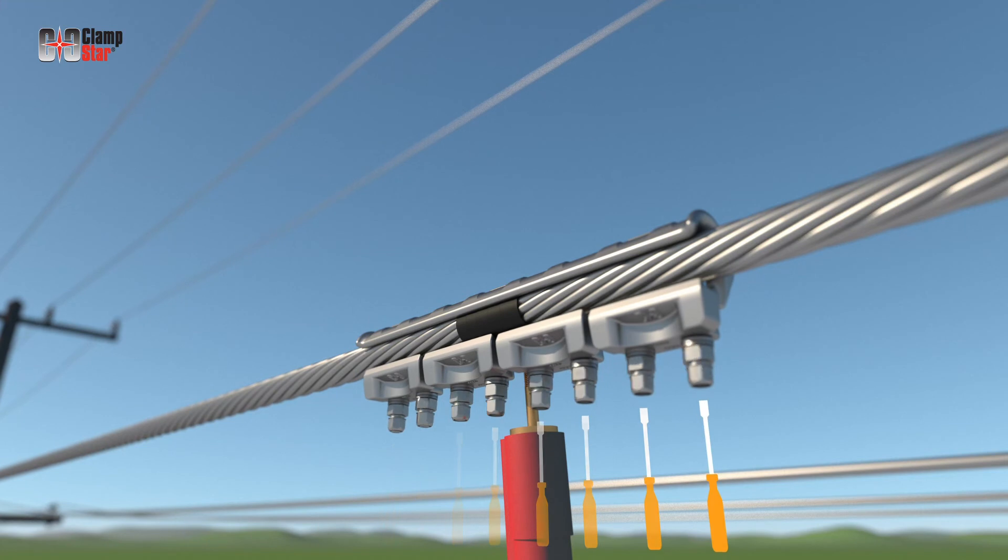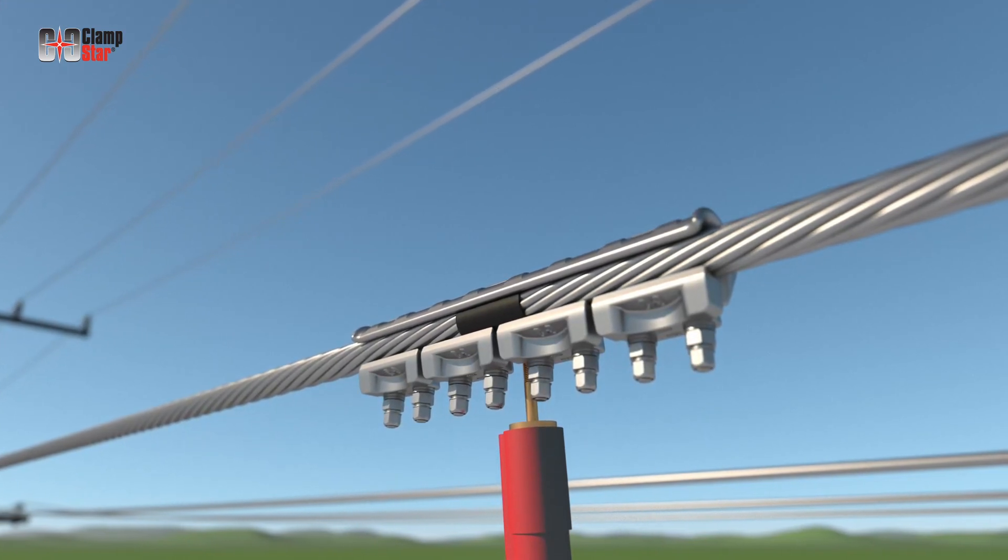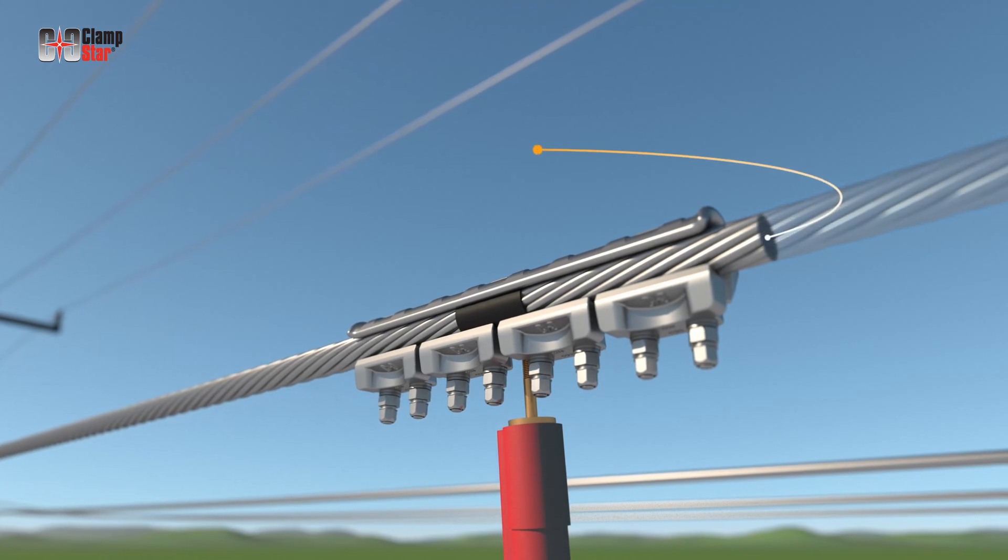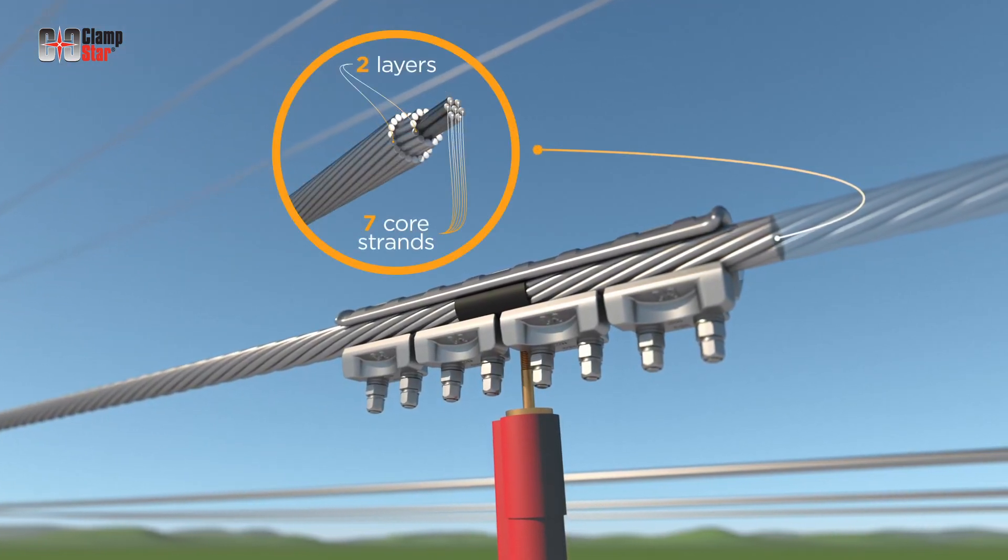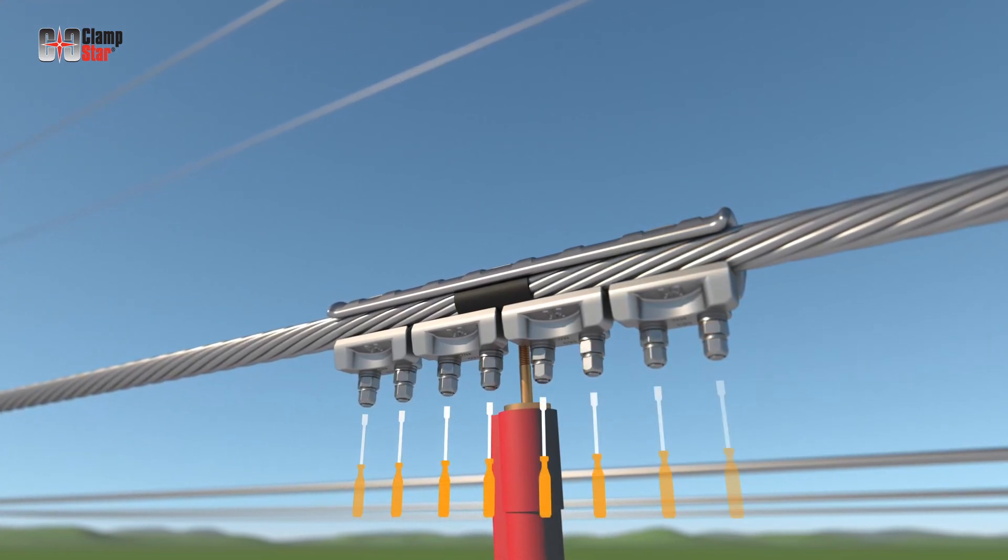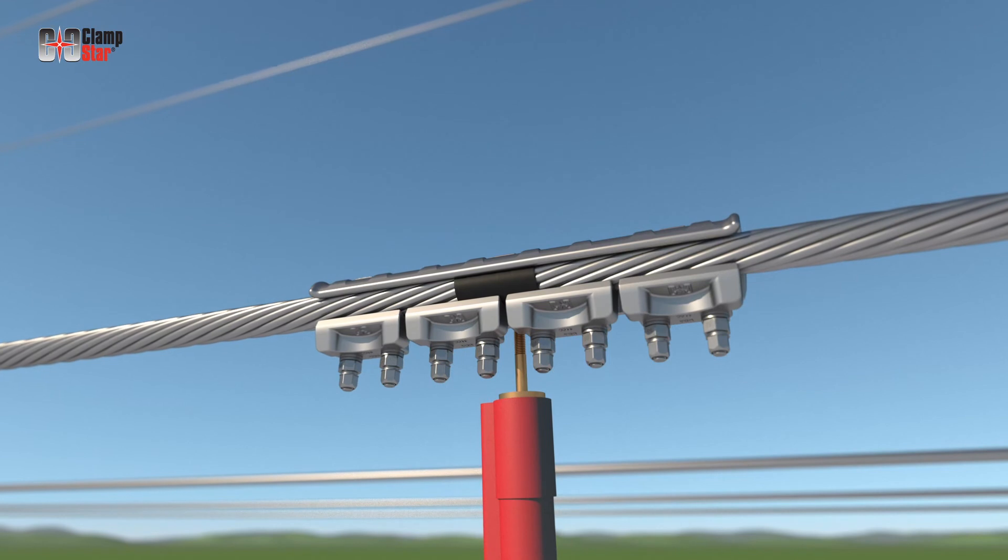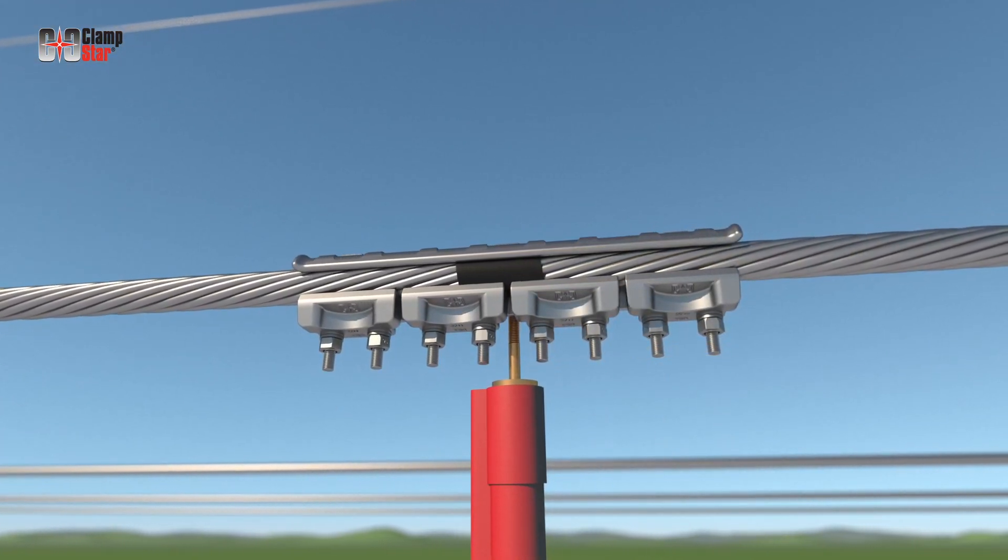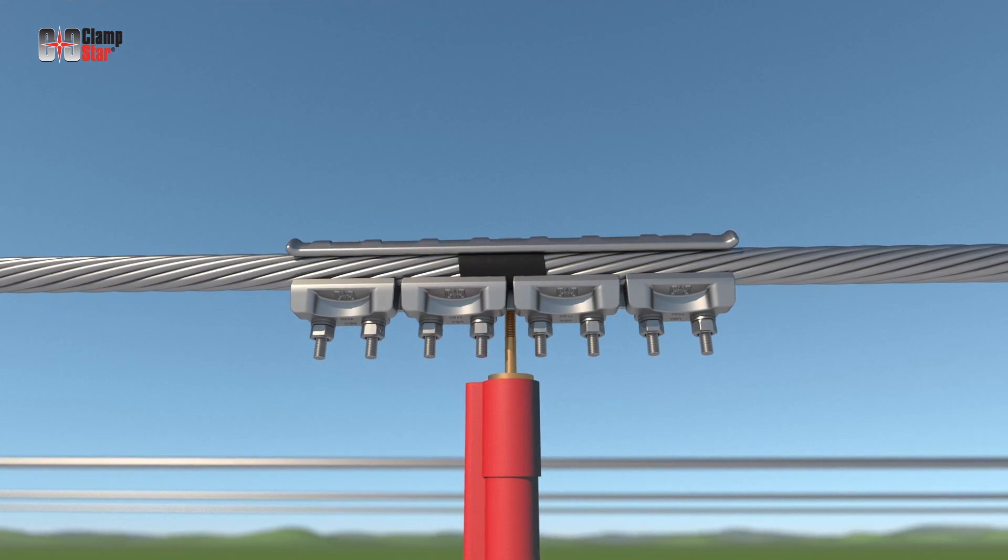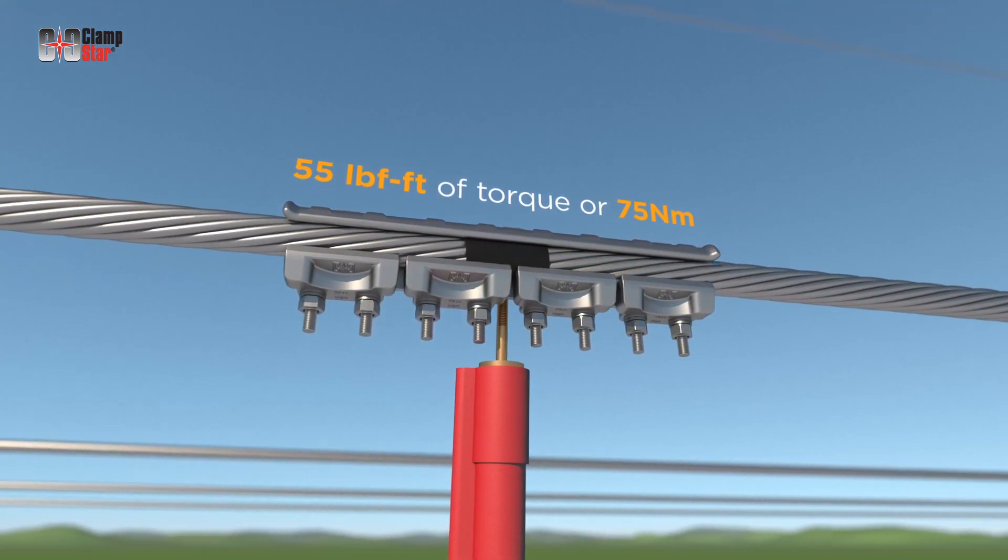Tighten the nuts in a linear fashion equivalent to the number of layers of aluminum stranding over the core. For example, assume a conductor has two layers of aluminum stranding over seven steel core strands. Apply torque to each nut in succession one time, with the second application of torque continuing until the head snaps off. For distribution class CRU units, this will occur at 55 foot-pounds of torque or 75 Nm.